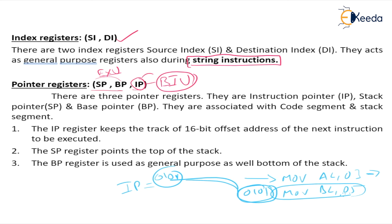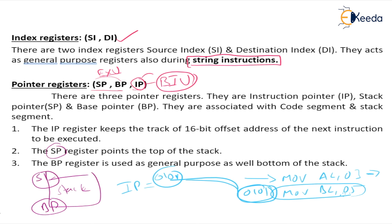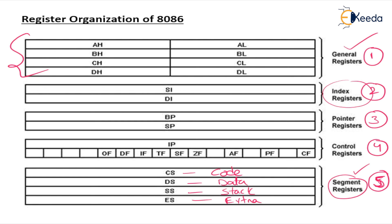The SP register points to the top of the stack. The BP register is used for general purposes as well as the bottom of the stack. If you consider the stack, the top of the stack is represented by SP and the lower part is indicated by BP — stack pointer and base pointer. IP holds the address of the next instruction to be executed, stored in the instruction pointer.